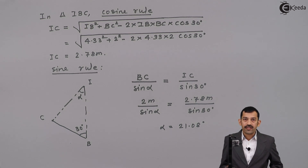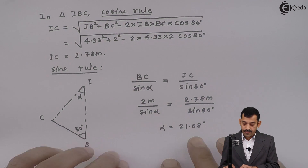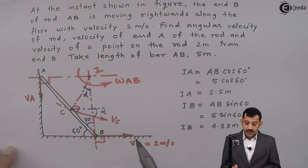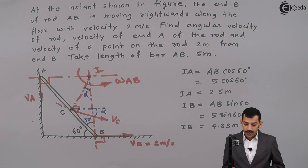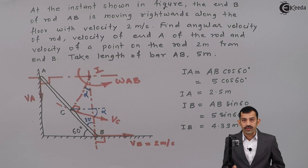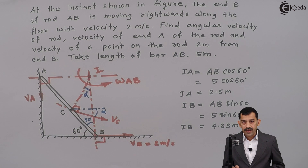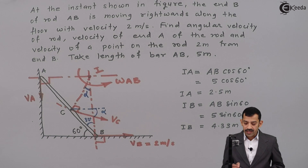Now all angles and lengths are known. VB is known, so the first equation applied is VB = IB × omega AB. Then VA = IA × omega AB. And VC = IC × omega AB. The inclination of VC with the horizontal is 21.08 degrees. One by one, applying the same equation V = R × omega, we will get all linear velocities.